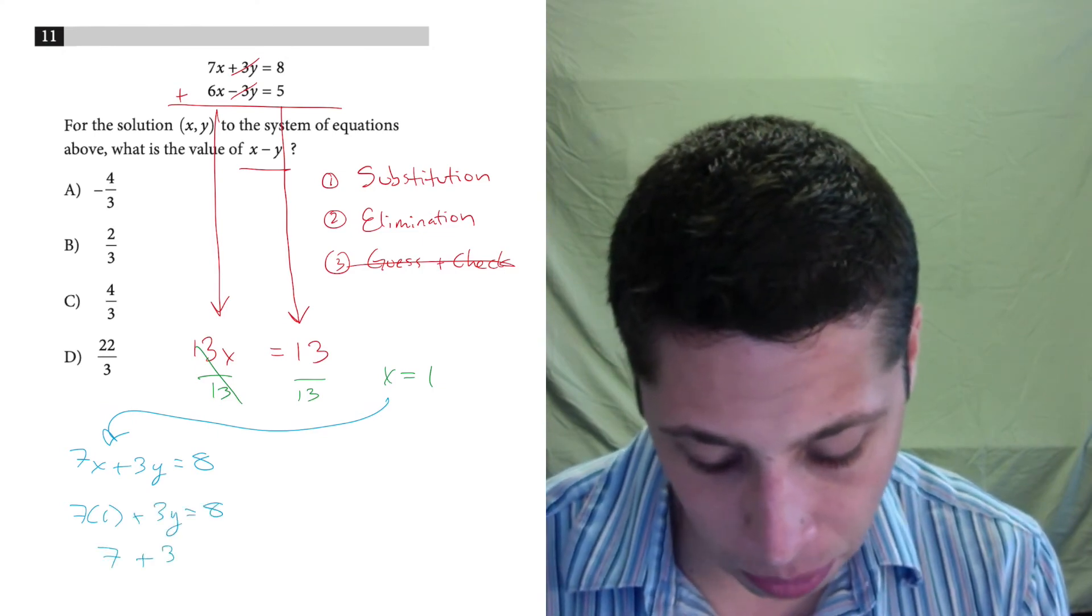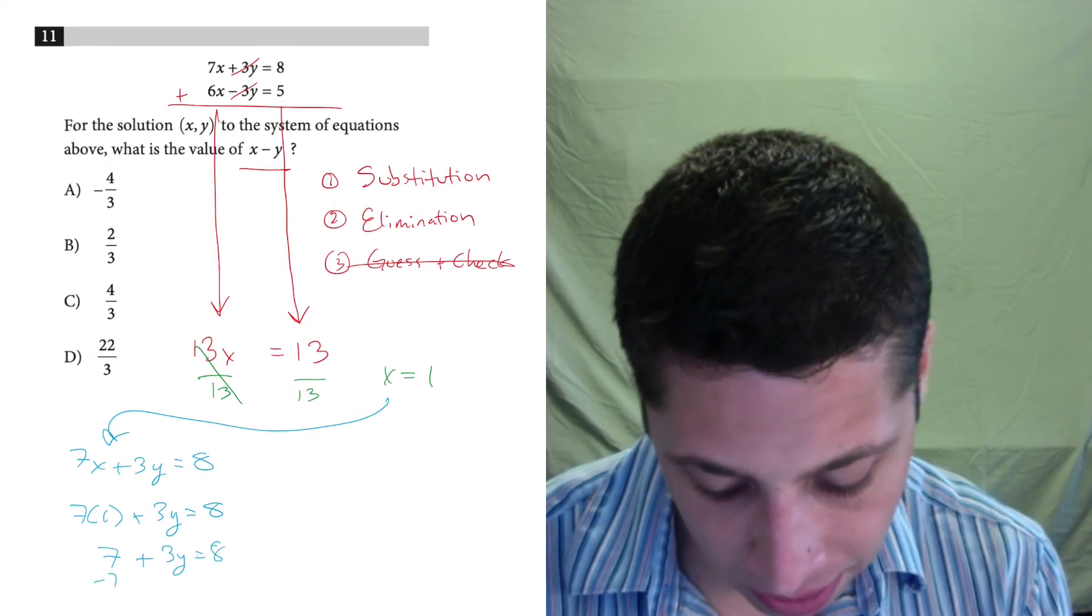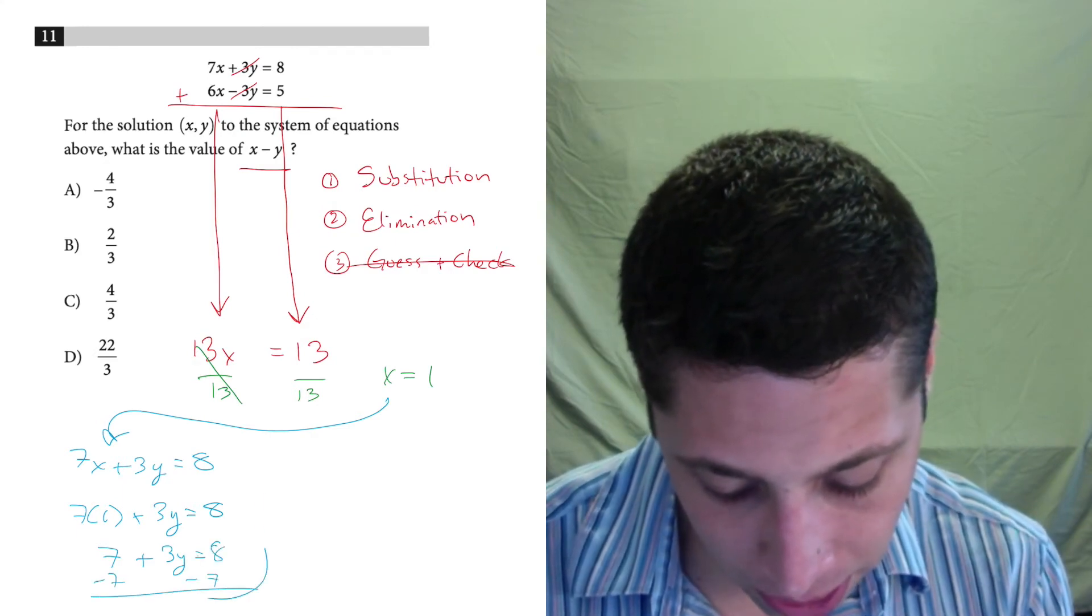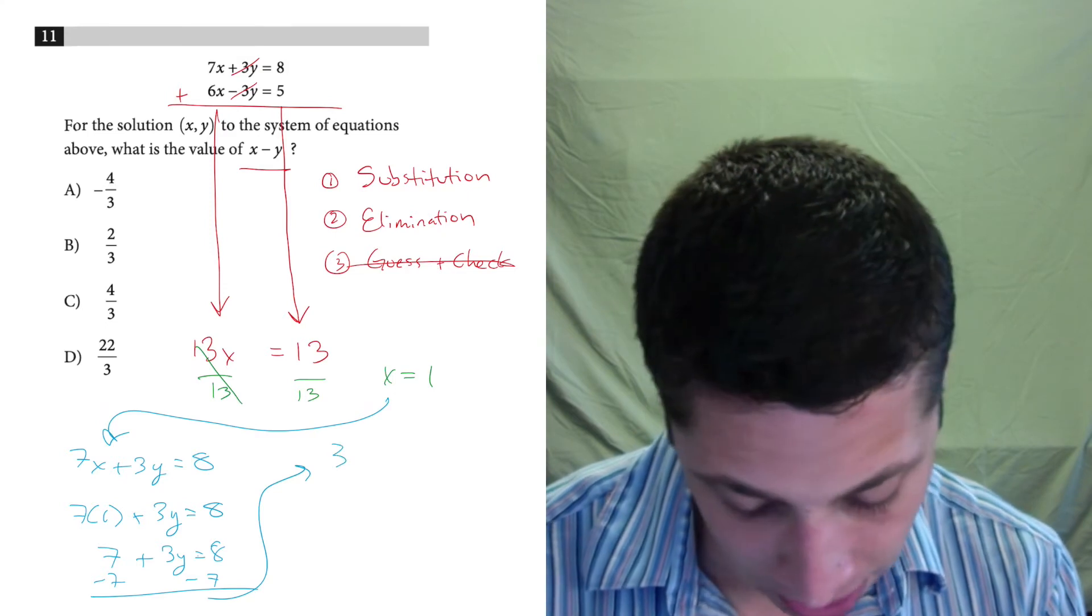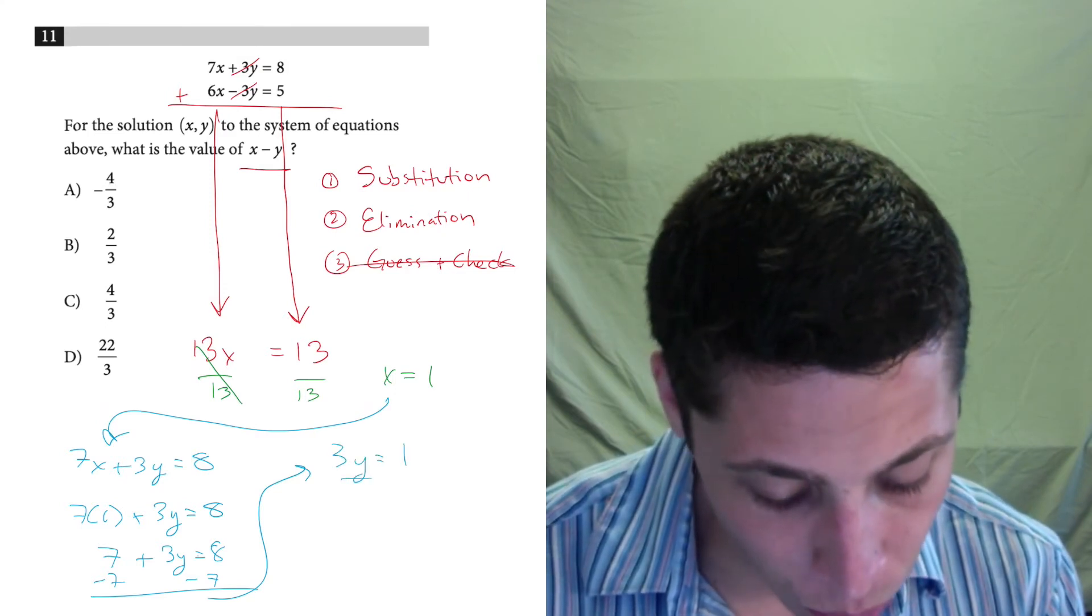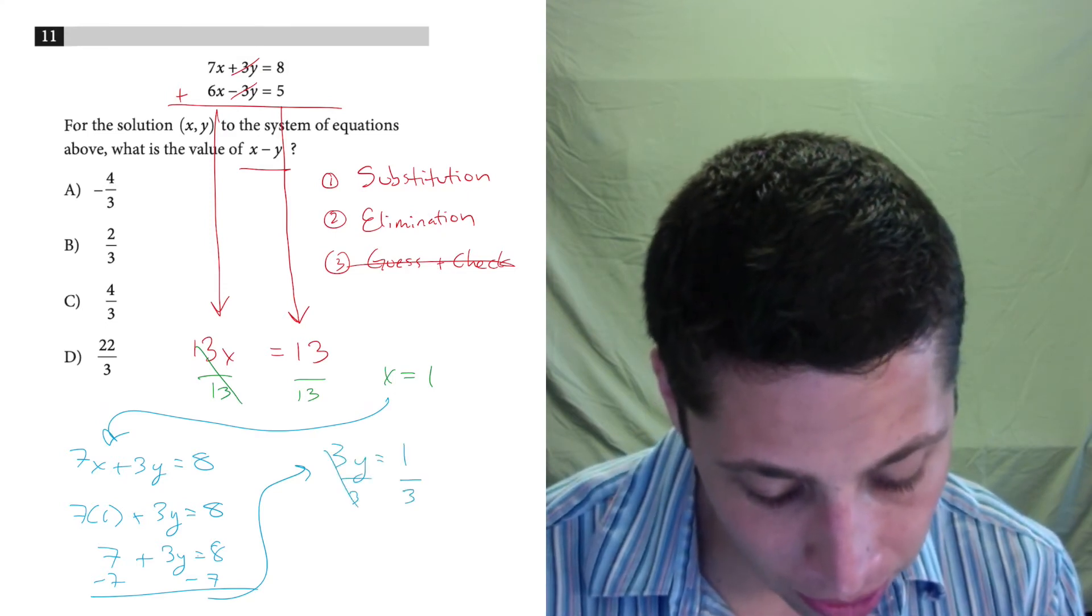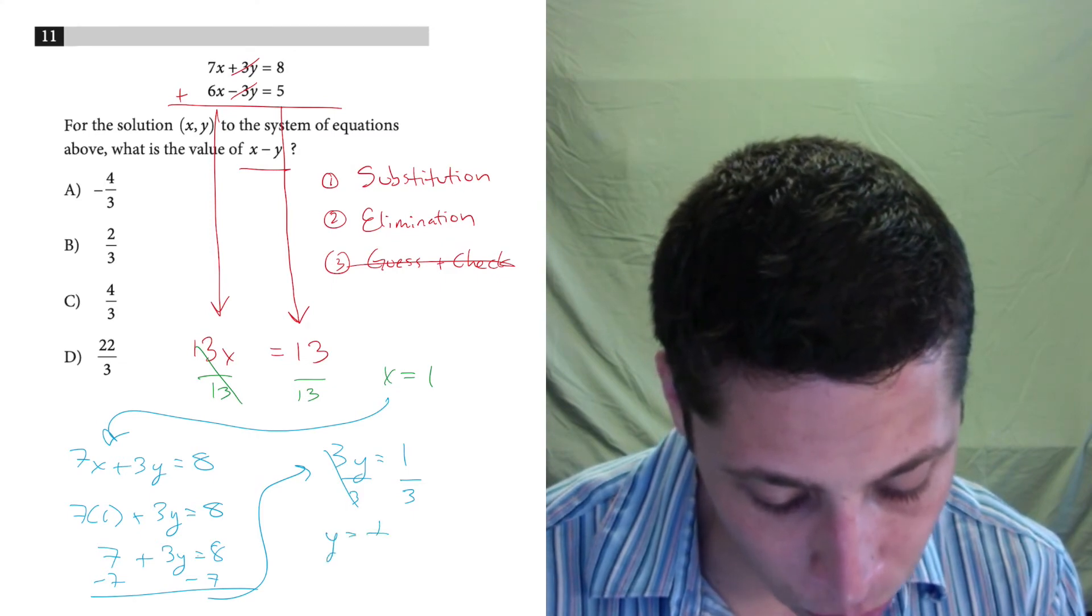7 plus 3y equals 8. Subtract 7. Running out of room. 3y equals 1. Divide by 3. y equals one-third.